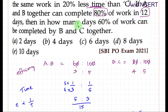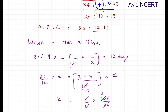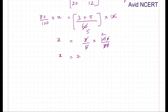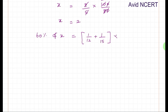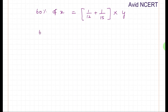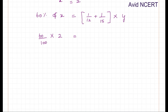For the next part: in how many days can 60% of the work be completed by B and C together? Work = (B's rate + C's rate) × days. B takes 12 days and C takes 15 days, so: (1/12 + 1/15) × y = 60/100 × x. We already found x = 2. LCM of 12 and 15 is 60, so (5+4)/60 × y = 60/100 × 2, giving 9/60 × y = 6/5.